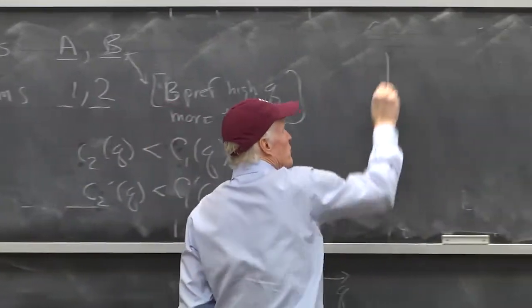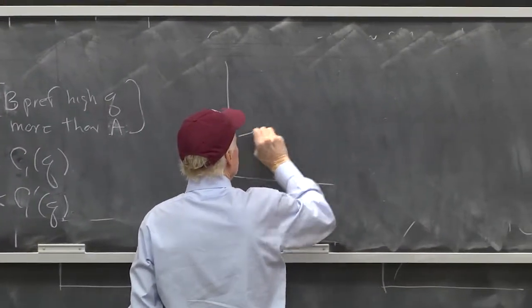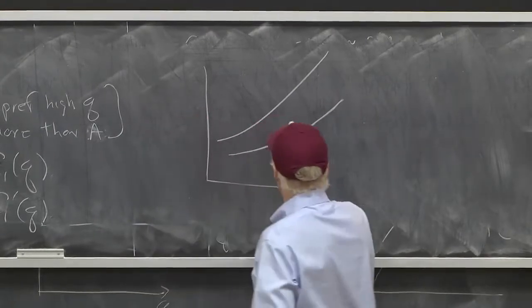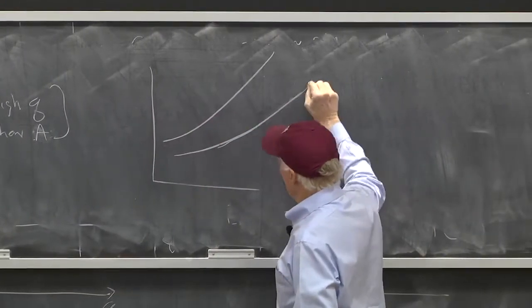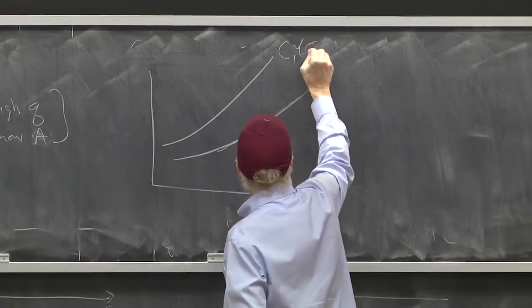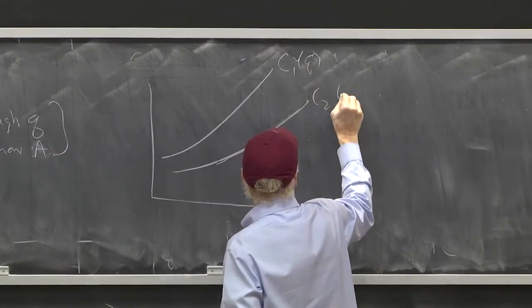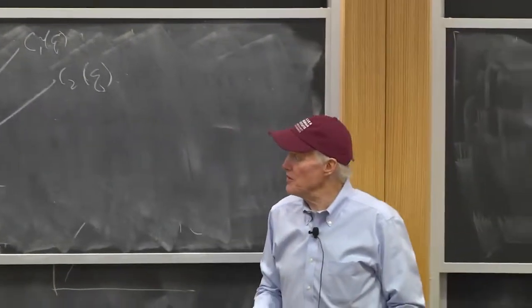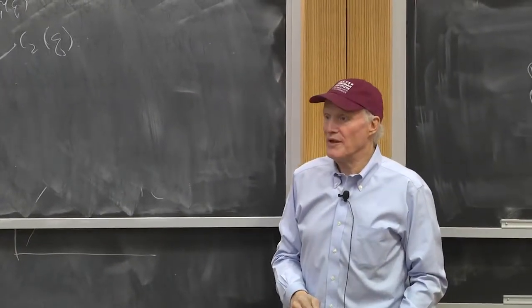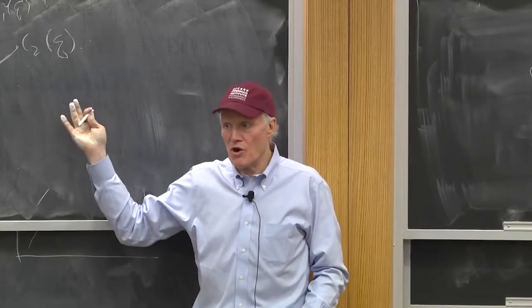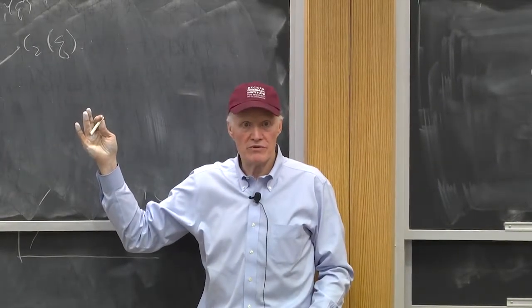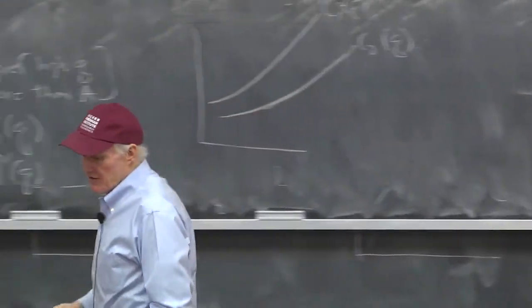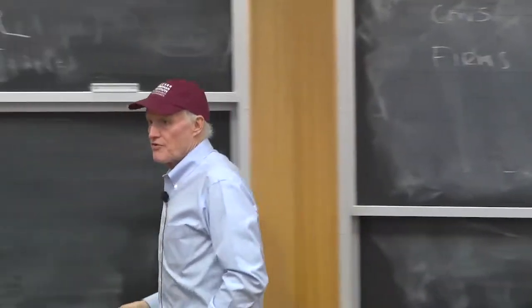So, like, if the 1s cost curve, 1s look like this, 2s look like this, right? They're always flatter, and they're lower. C1 of Q, C2 of Q. That's my assumption. I'm assuming that 2s not only are lower cost, they actually have a lower marginal cost of quality. So, they're lower average cost and lower marginal cost. You'll see it doesn't really matter. That's just part of the story.